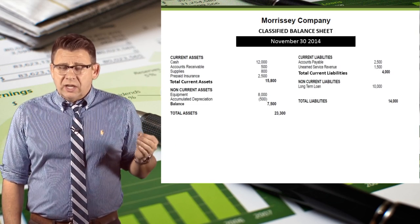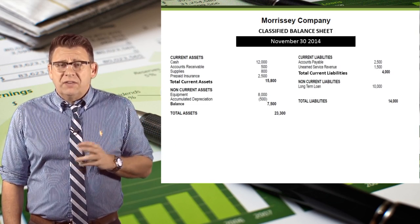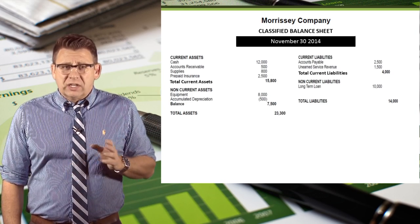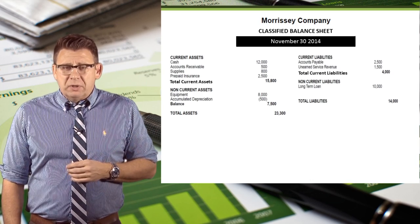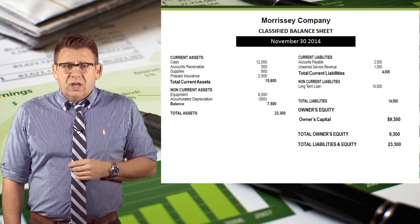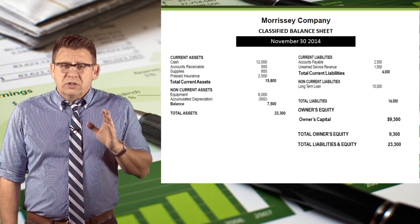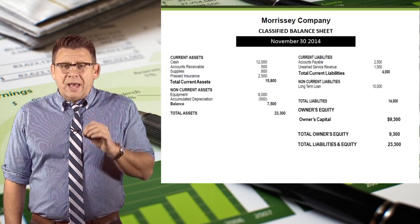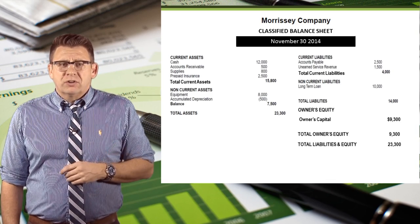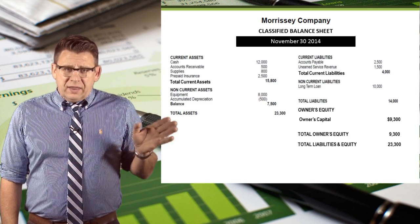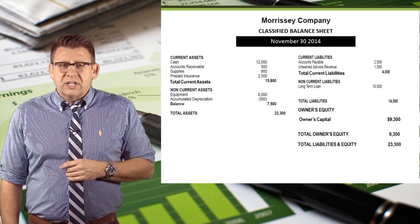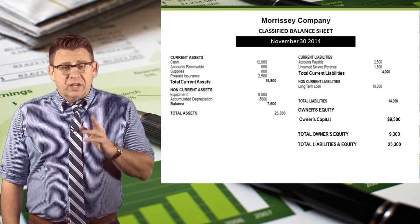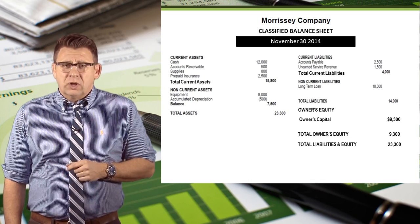Then we move on to the liability side and start with current liabilities. Here we list our current liabilities in order of liquidity and then total them. Then our long-term liabilities are listed, and we total our liabilities. Finally, we prepare the owner's equity section. Here is where we report the ending owner's capital from the statement of owner's equity, which becomes total owner's equity. Finally, we total liabilities and owner's equity. If we have done everything correctly, it should be the same amount as total assets.